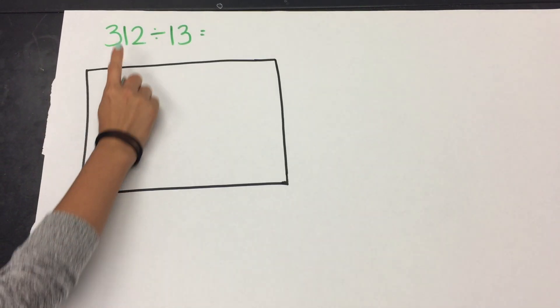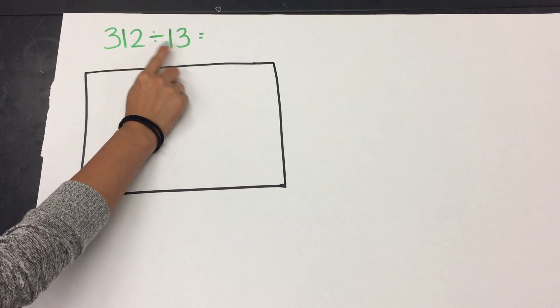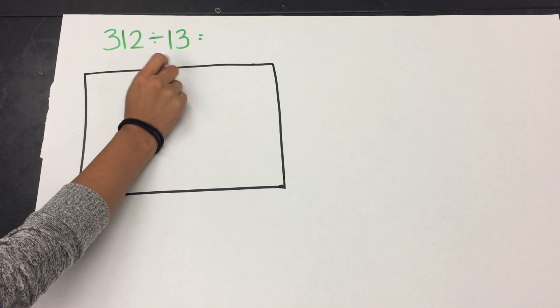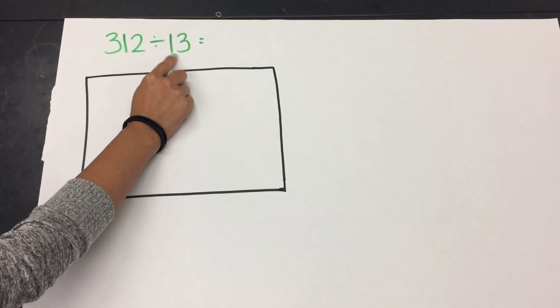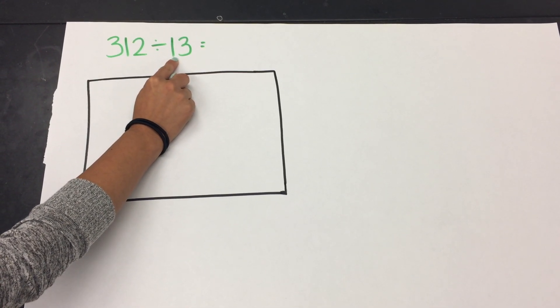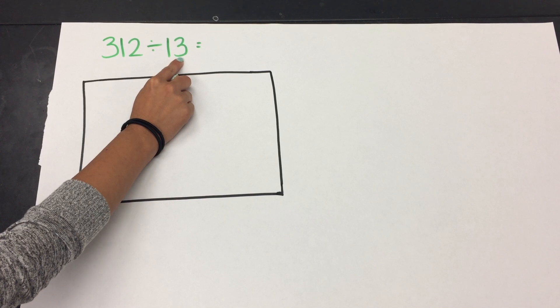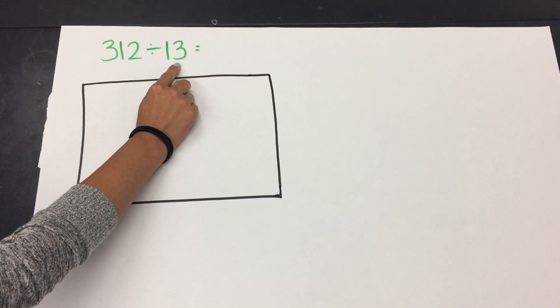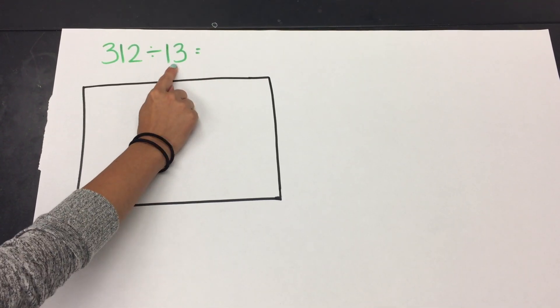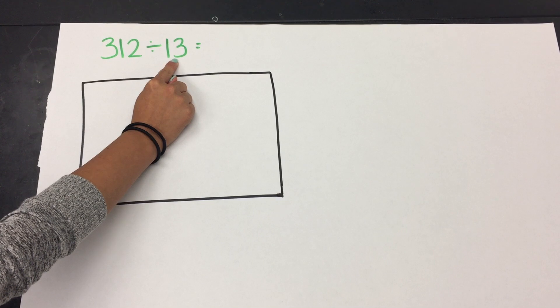We're going to use the area model to solve 312 divided by 13. In this problem, your divisor can represent the number of groups or the amount in a group because there is no context. But for this example, we're going to think of the 13 as the number in a group.